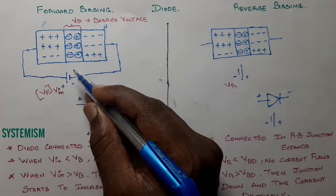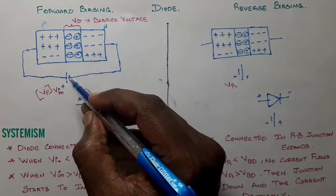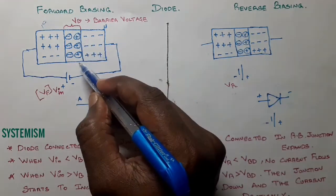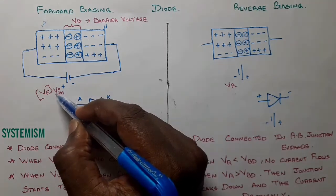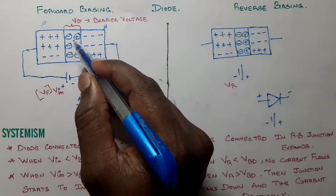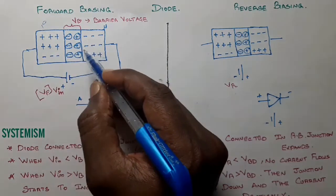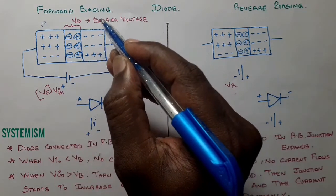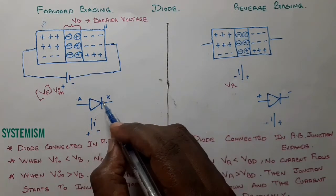So what we do is increase the forward biasing voltage. When we increase this voltage more than the barrier voltage — since the barrier has a strength — if we apply voltage greater than the barrier strength, it will allow the electrons and holes to cross the junction, and the current starts increasing gradually.